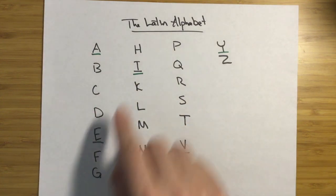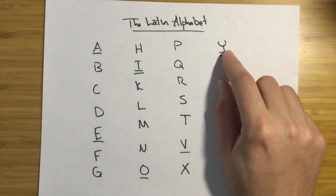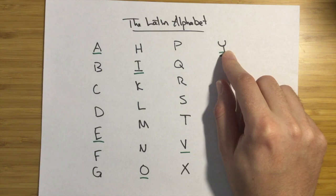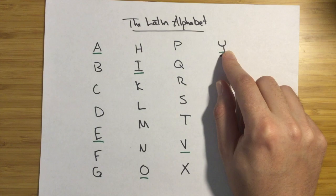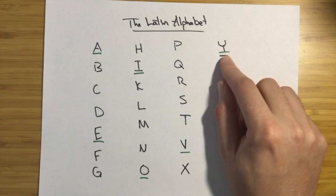For all these vowels here that I've underlined, Wheelock's Latin gives, for most of them, alternate actual sounds that you're supposed to produce. It's not just a length difference. I disagree with the historical take on that.